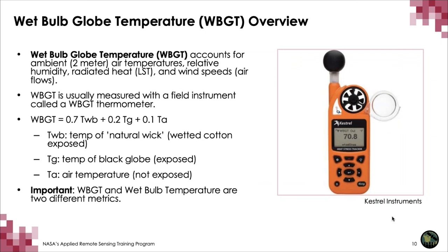One metric, used largely by physiologists and the public health community, is called wet bulb globe temperature. Wet bulb globe temperature is typically measured with a field instrument on the ground. It accounts for 2-meter air temperature, relative humidity, radiated heat (land surface temperature), and wind speeds or air flows. When calculated with an instrument, 70% of it is the natural wick temperature — the temperature of wetted cotton covered in shade — plus the temperature of a black globe to measure the radiated heat, and then the air temperature not exposed.